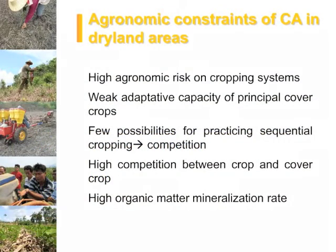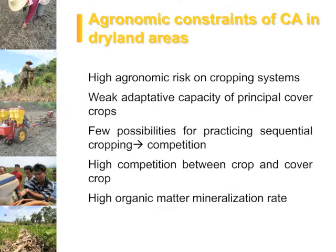Let us summarize the different agronomic constraints of CA in dryland areas. The first constraint is the high agronomic risk on cropping systems due to extreme climatic conditions. There is a weak adaptive capacity of principal cover crops — cover crops suited for CA implementation in humid areas may not be suited for dryland areas, or whenever they are suited, they will not provide the same biomass production. There are also very little possibilities for practicing sequential cropping due to competition.